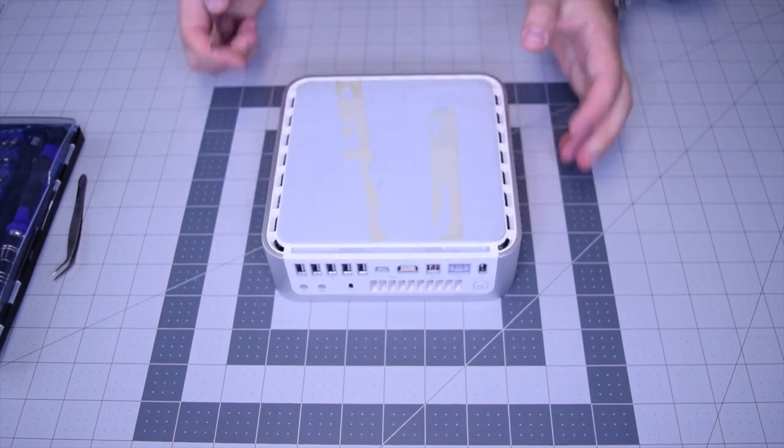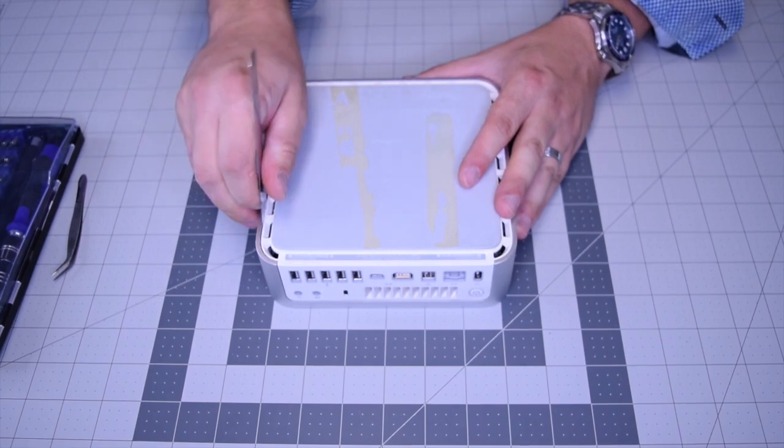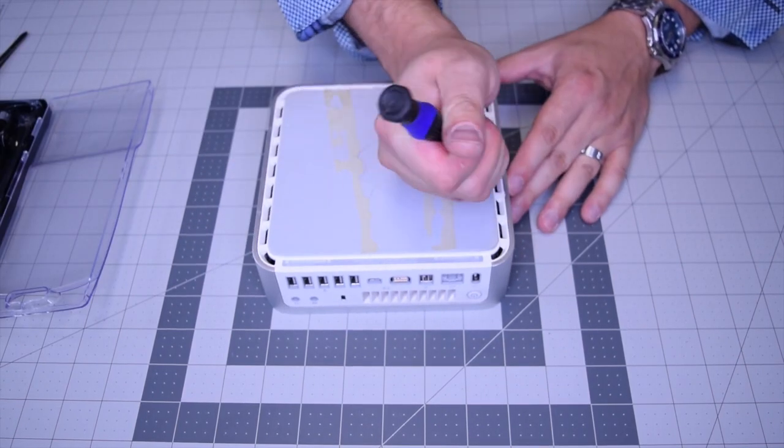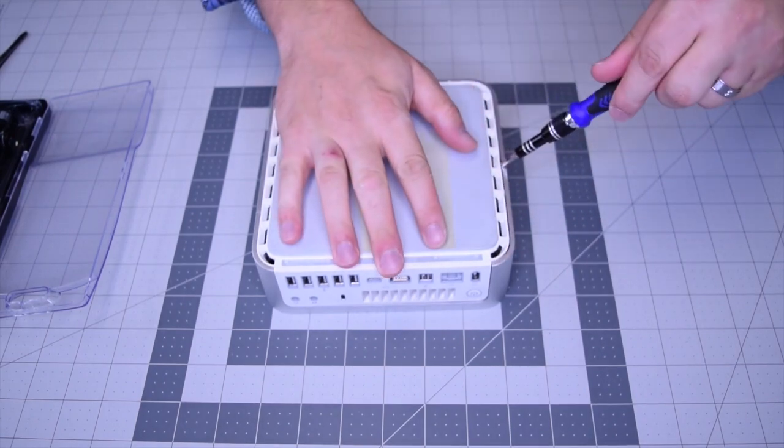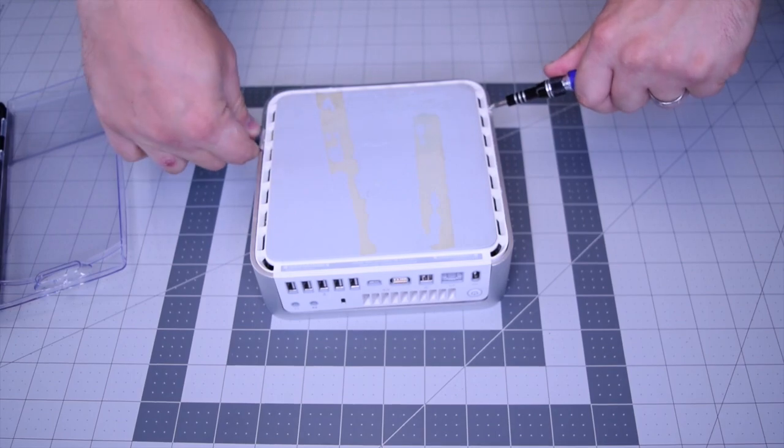Pry into the seam on the right side. We're going to need to pry in from both sides, so use the flat-headed screwdriver as a prying tool to come in from the opposite side.